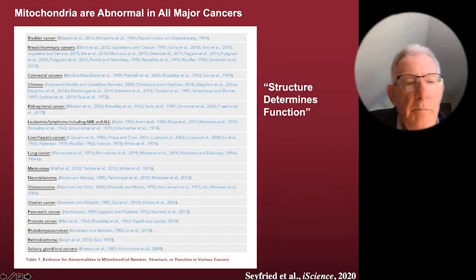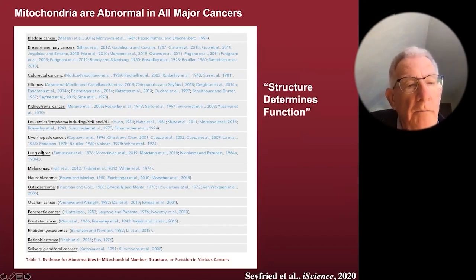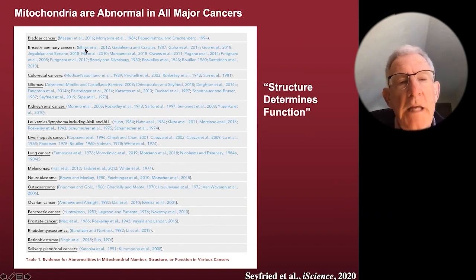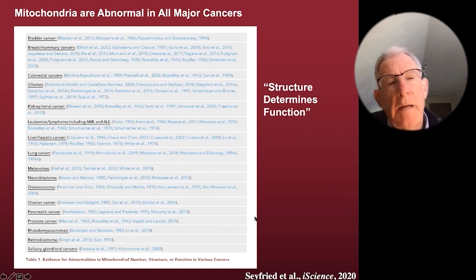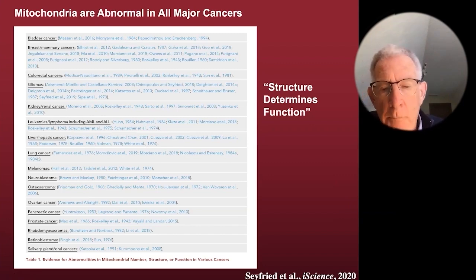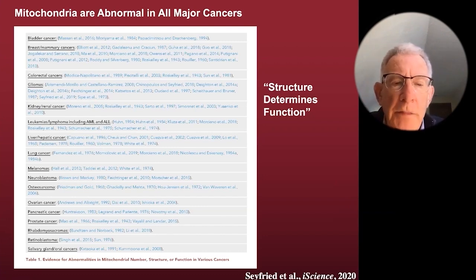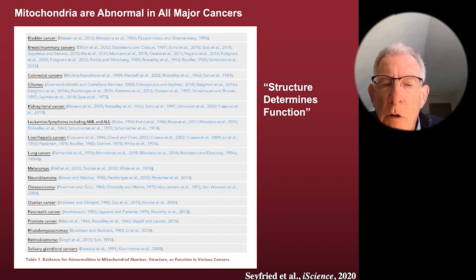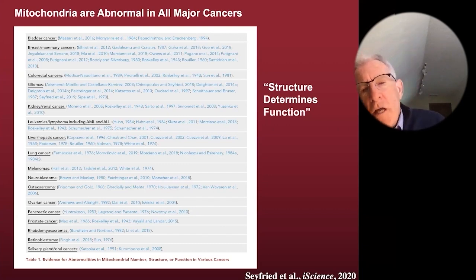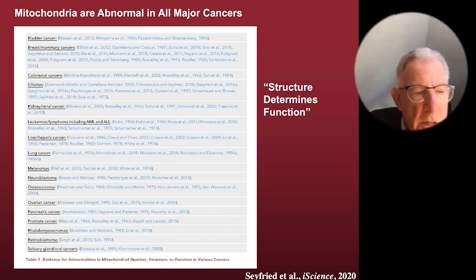I went through the literature and detailed across all of the major cancers — lung cancer, neuroblastoma, pancreatic, ovarian, colorectal, breast, and others — that mitochondria were abnormal in structure and function. Structure determines function. If the structure is abnormal, the function will be abnormal. If the mitochondria structure is abnormal, the function of that organelle will be abnormal. The role of that organelle is to generate energy through respiration. So if you can't generate energy through respiration, in order to survive, the cell must ferment.